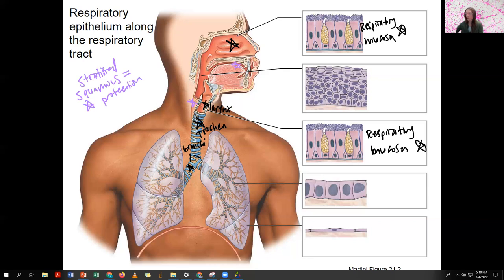The oral cavity is also stratified squamous. This makes sense, but most of the pharynx is going to be stratified squamous because food goes there.